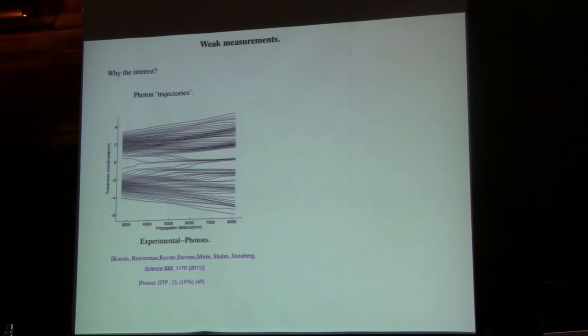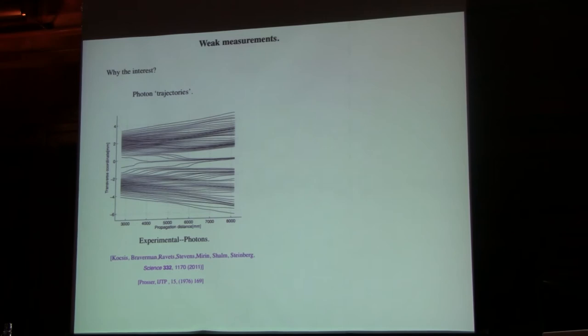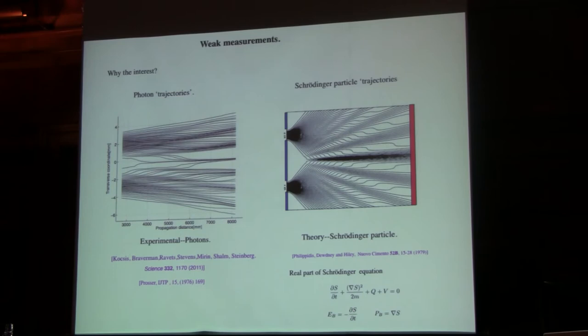So why am I interested in weak measurements? Well, I really started to take notice when somebody sent me this paper which was a claim that this is a measurement using weak measurements and it produces what looked like photon trajectories. And I was particularly interested in that because for many years Chris Dewdney and Chris Philippidis have actually calculated these trajectories from the Bohm theory. And if you notice there is a little bit of similarity but not complete similarity. That's not surprising because here we're using the Schrödinger particle whereas here you're dealing with electromagnetic radiation and you've got to be careful how you compare the two different ideas.